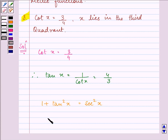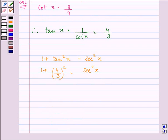So on substituting the value of tan x in this formula we have 1 plus 4 by 3 the whole square is equal to sec square x. That gives us 1 plus 16 by 9 is equal to sec square x. 25 by 9 square root is equal to sec square x.